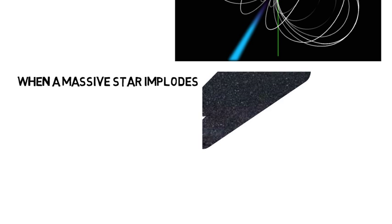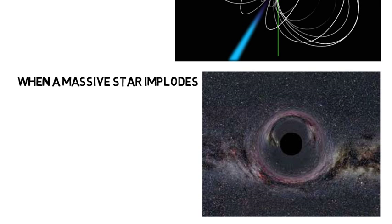Then when a more massive star implodes, sometimes a neutron star is not formed, but instead a black hole is what is created, where the gravity is so intense that not even light can escape.